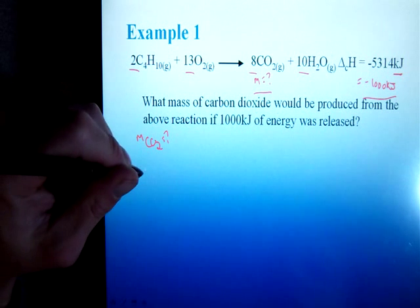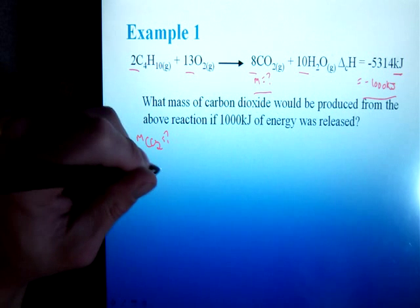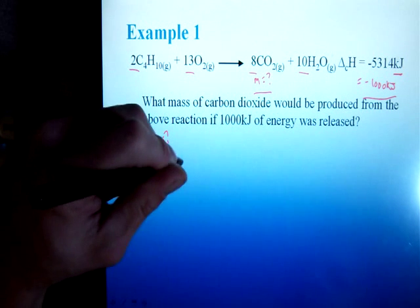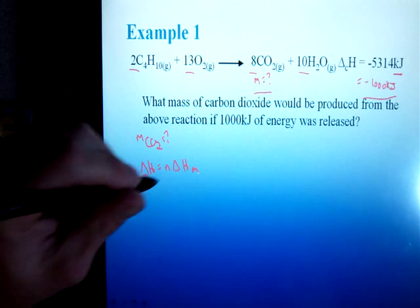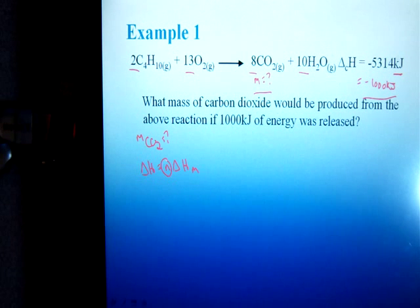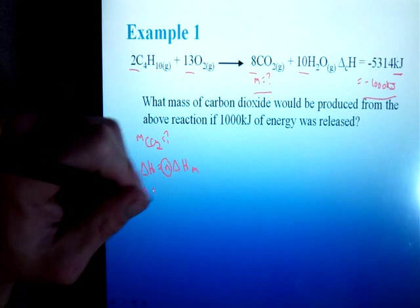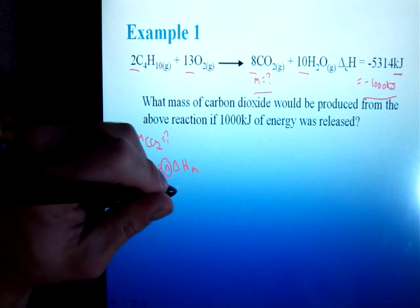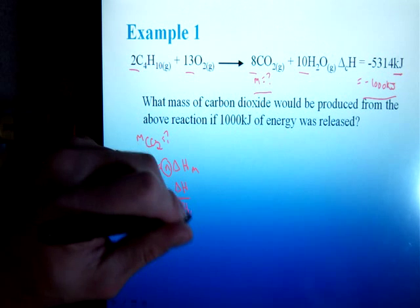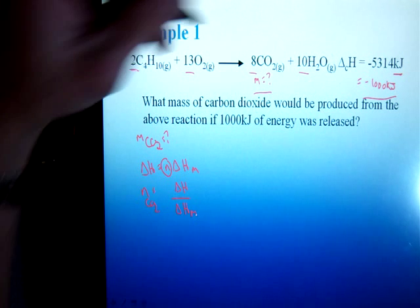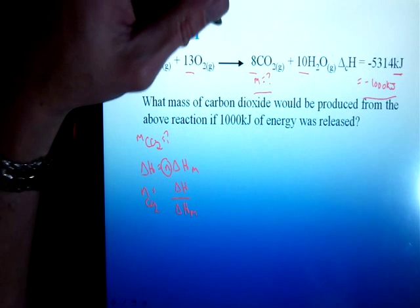Looking for potential energy, dealing with potential energy. There will be our general formula for that. I am trying to solve for mass of CO2, which means I should probably solve for moles at some point. Moles of CO2 equivalent to the delta H over the delta HM. Another important point: you must remember the difference in units.